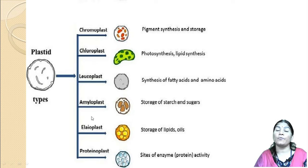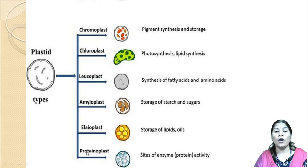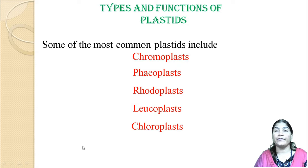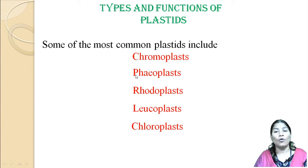These are the different types of plastids: chromoplasts, chloroplasts, leukoplasts, amyloplasts, elaioplasts, and proteinoplasts. But commonly in plant sciences, the plastids we learn about are chromoplasts, phaeoplasts, rhodoplasts, leukoplasts, and chloroplasts.